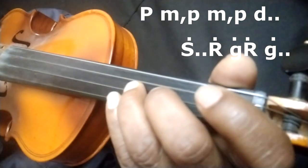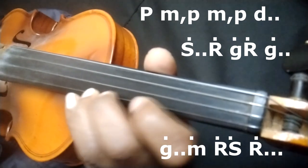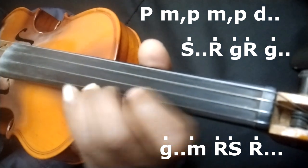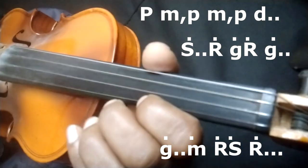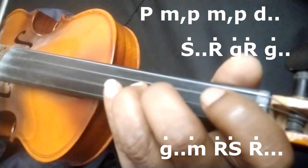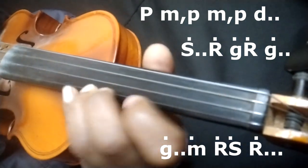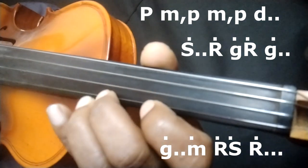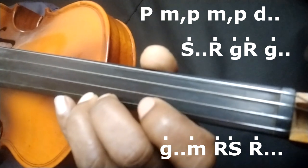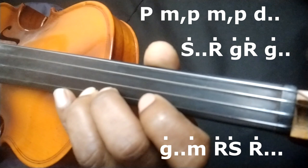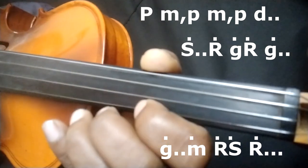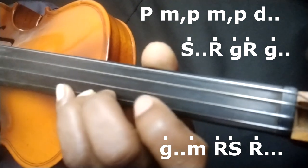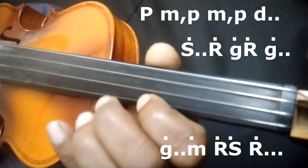Pa ma pa ma pa da sa rig riga. Pa ma pa ma pa za. Ma pa ma pa da sa rig riga. Sa rig riga. Ga ma di sa riga. Sa rig riga. Ga ma di sa riga.